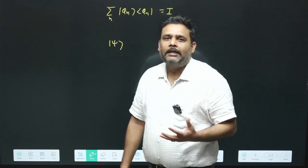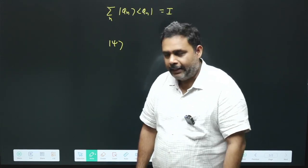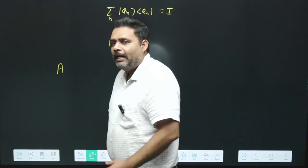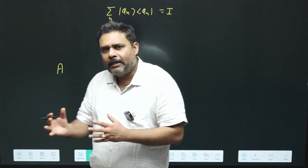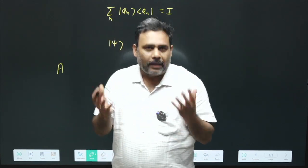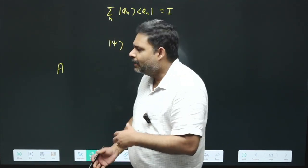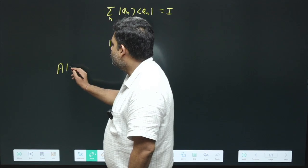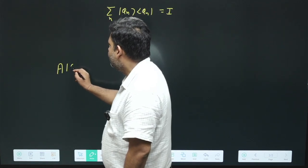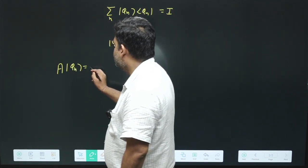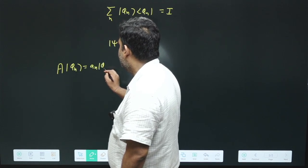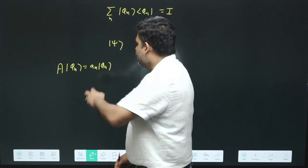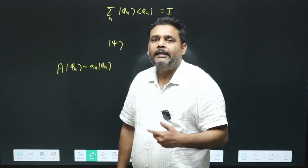So what we need, we need some operator A. Suppose I have operator A, and if I have this operator then we can resemble this is something like a matrix and we have the eigenstate and the eigenvalue. So I can write A phi n is equal to A n phi n. And what is A n? It is the eigenvalue. And what is phi n? It is the eigenstate.